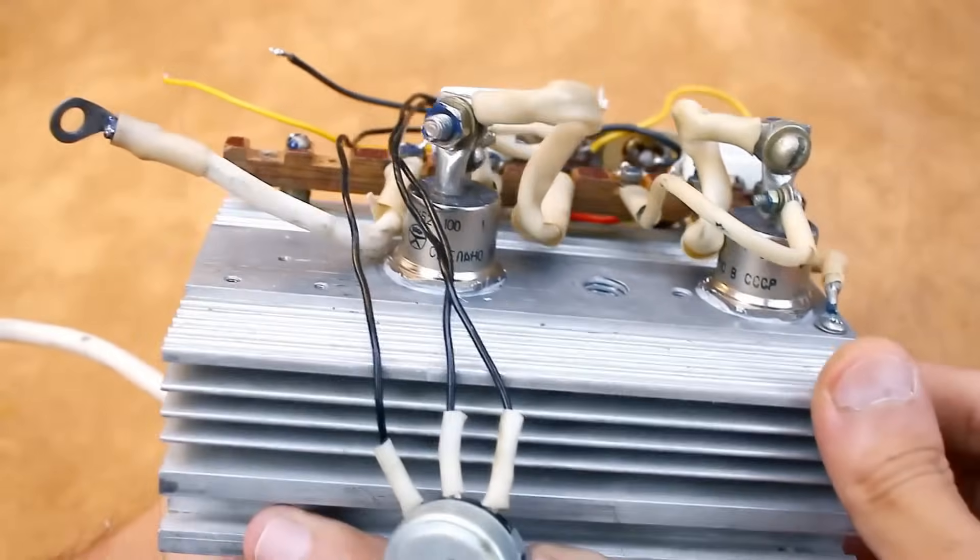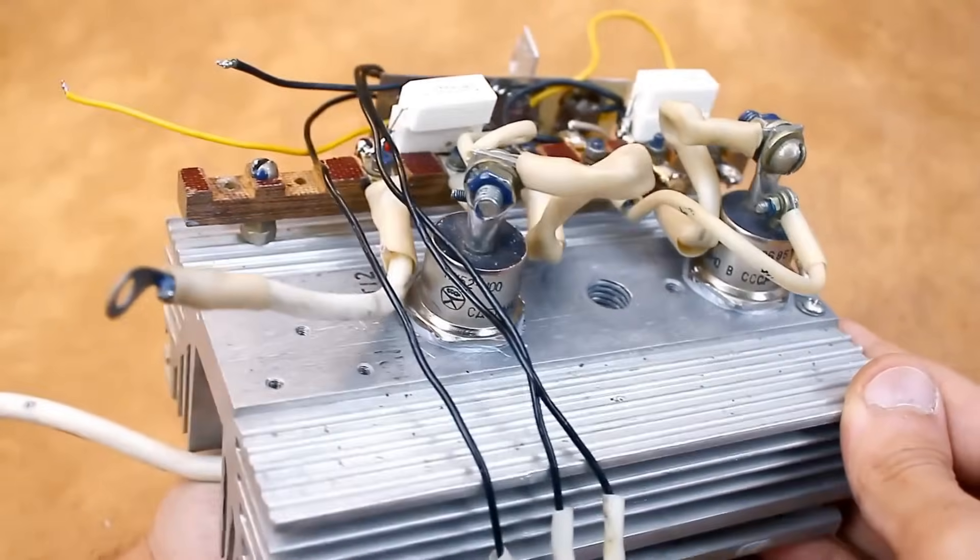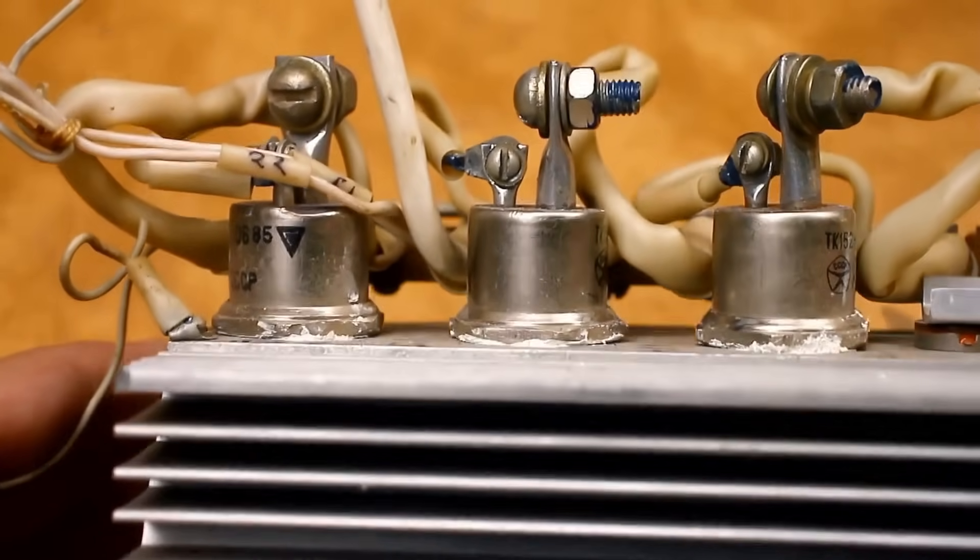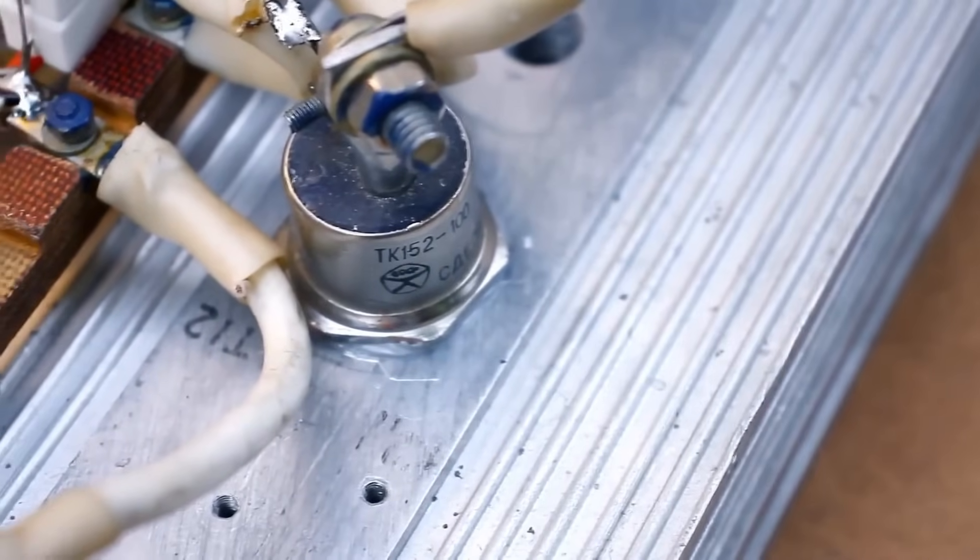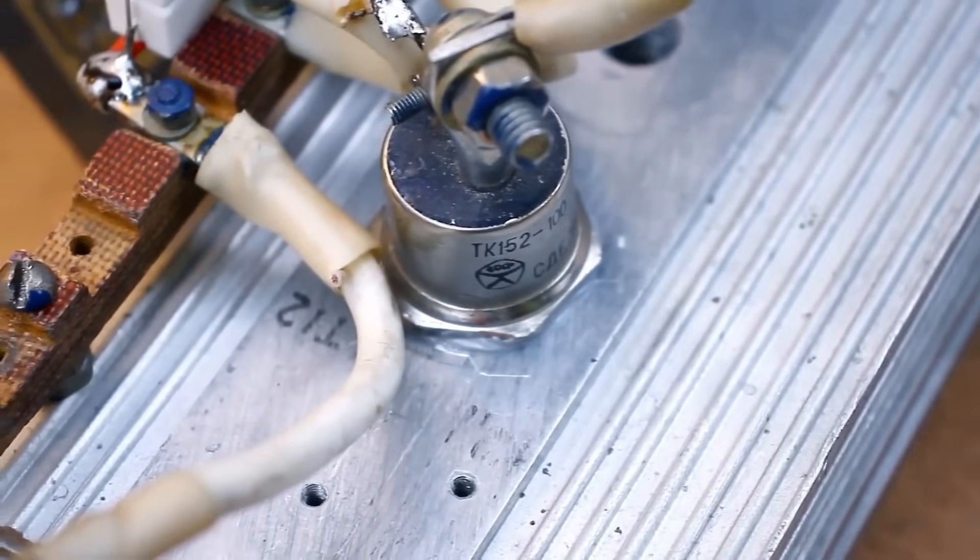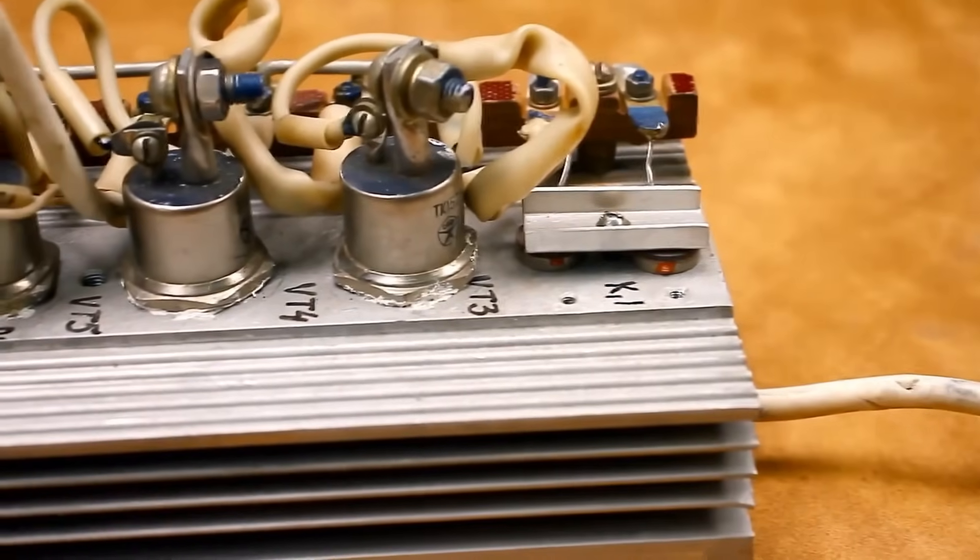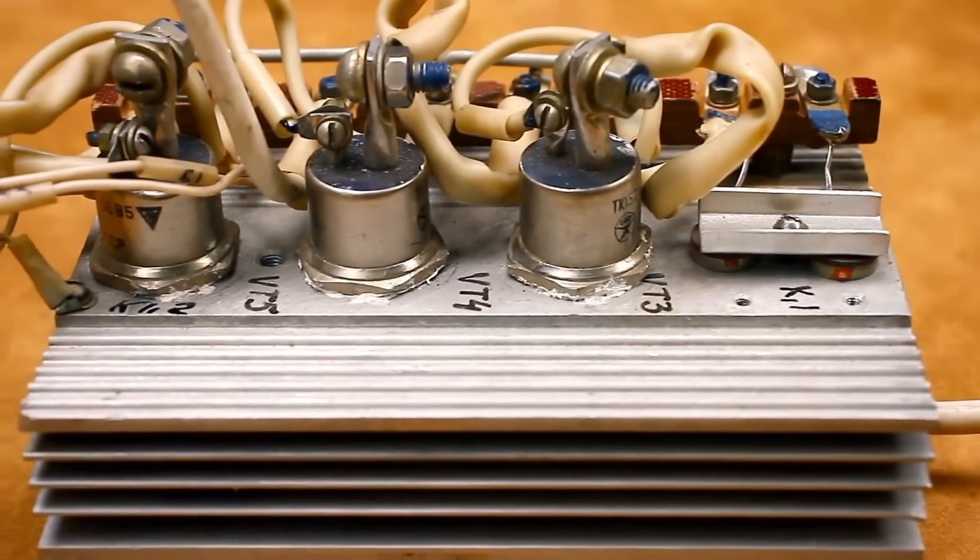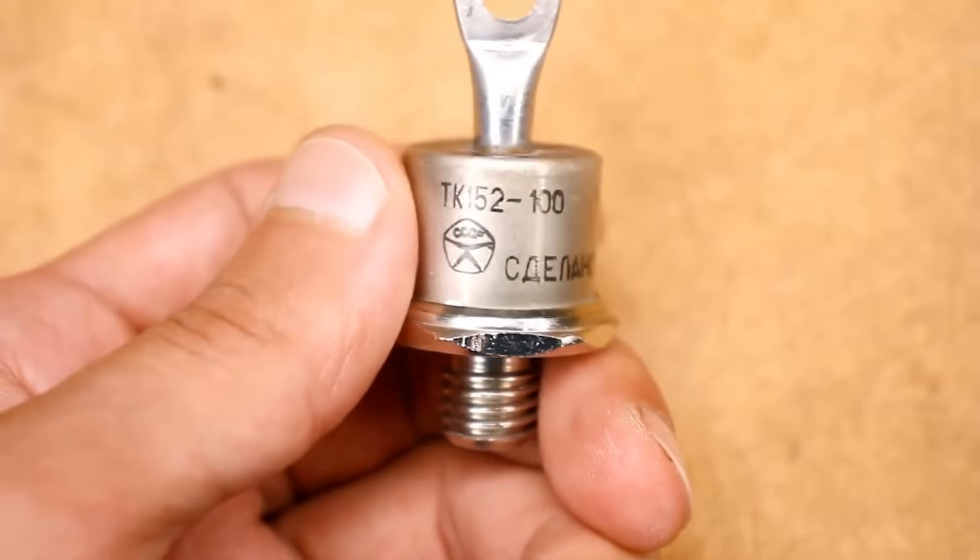The electronic load will operate in linear mode. This is the most demanding mode of operation for a transistor, and the size of its casing is important here, as the transistor will act as a heater. All the power will simply go into heating the switch. And its casing must be able to transfer this heat to the heat sink. Here we have a perfectly suitable casing.